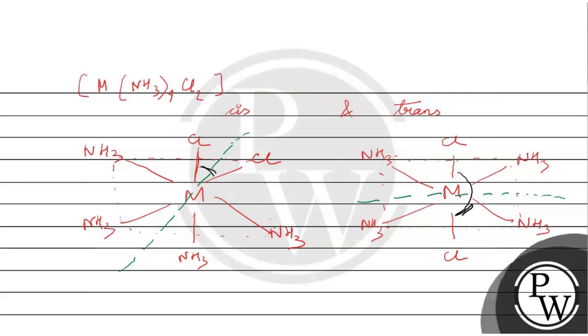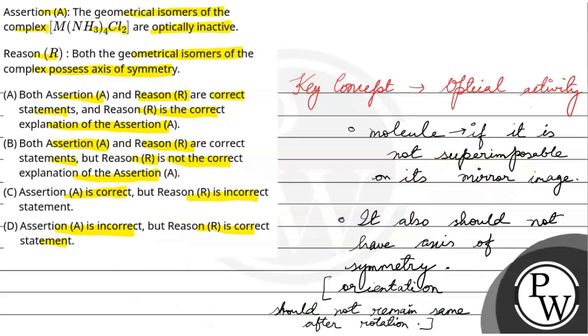Therefore, they are shown optically inactive. So, A is the geometrical isomers of the complex are optically inactive. This is the reason: Both the geometrical isomers of the complex possess axis of symmetry. This is also true, and it is also the reason why. Because they are optically inactive.